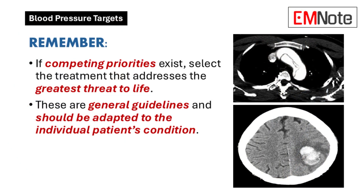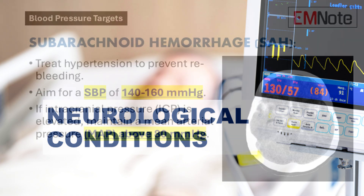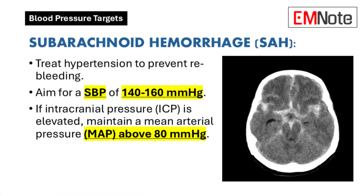Blood Pressure Targets for Critical Conditions. In subarachnoid hemorrhage cases, hypertension must be managed to prevent re-bleeding episodes. Systolic blood pressure should be maintained between 140 and 160 mmHg. In cases where intracranial pressure is elevated, mean arterial pressure must be sustained above 80 mmHg.